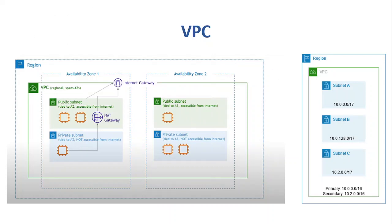AWS regions are the geographical areas where AWS data centers are located, and availability zones are basically those data centers. Whenever we are provisioning a VPC, it is set up at the regional level, which means it spans across multiple availability zones within that region. As we can see in the image, this is one region in which we have two availability zones, and our VPC is defined at the region level and spans over both of them.